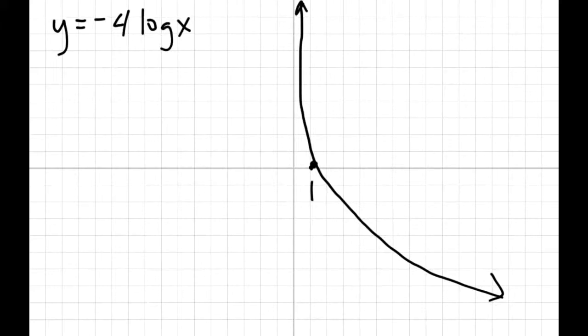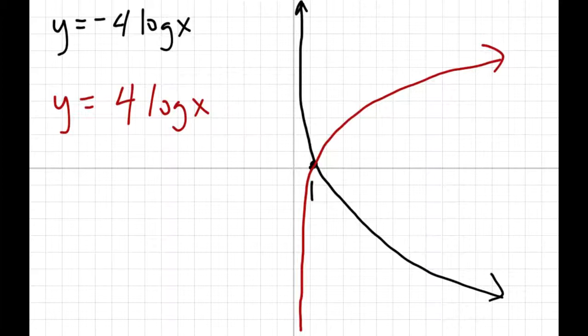So our positive graph goes upwards, so that would be what negative 4 would look like. Let's just draw a positive 4 just so you can kind of see the difference. So it'll be starting on the bottom, it'll go through 1 and go up. So you can see they're pretty much identical graphs, just the positive one is going upwards, the negative one is going downwards, it's going to be decreasing.